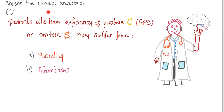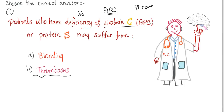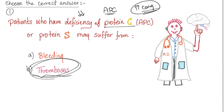Question 1: Patients who have a deficiency of protein C or protein S — will they suffer from bleeding or thrombosis? The answer is B, thrombosis. Activated protein C is the brake of coagulation. When you don't have a brake, you have lots of accelerator. When you have lots of coagulation, you thrombose.